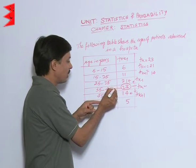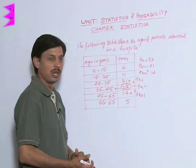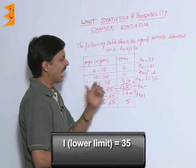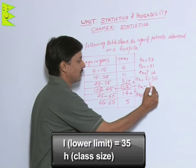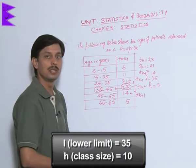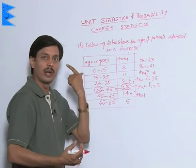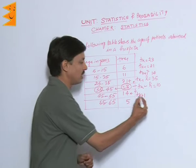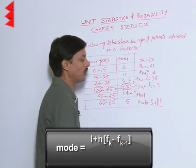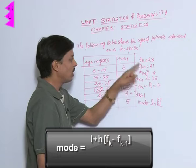The modal class is where the mode lies — that is, the class with maximum frequency 23. Its lower limit is known as L, so L is equal to 35. The class size h is the difference between class boundaries: 5 to 15, 15 to 25 — the difference is 10 everywhere. So h is equal to 10.